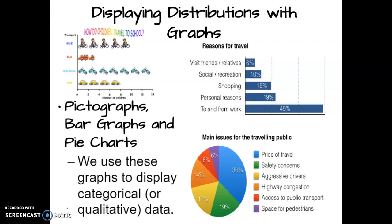On the right you have 'Reasons for Travel,' which is a bar graph. This bar graph is drawn horizontally, but bar graphs can also be drawn vertically — you can do them lots of different ways. There are lots of websites that will let you create bar graphs. At some point during this unit I'll have you searching for different websites that allow you to create graphs, and some are very easy to use.